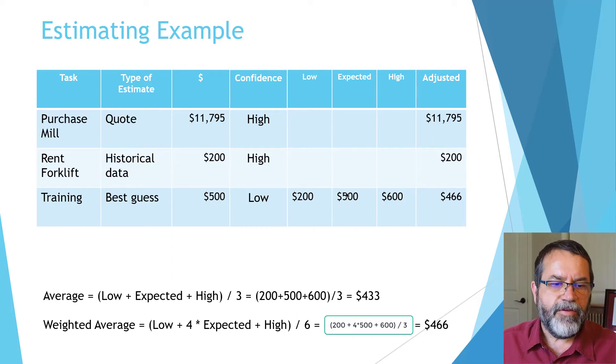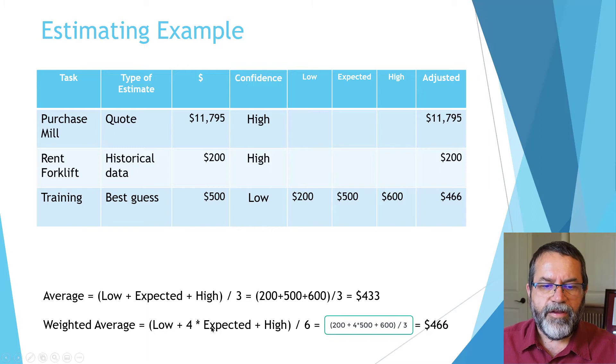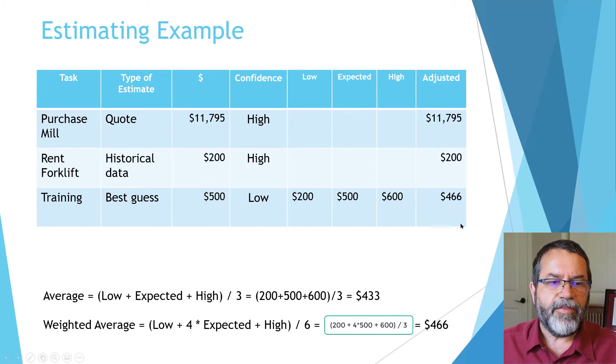I can do a simple average, which gives $433, but I don't want to do that because I expect the price to be $500. So I'm going to do a weighted average—put more weight on my $500 estimate and less on the high and low range. I take four times my expected, add in my low and high, and divide by six. That comes up with $466, which I think is a better estimate.